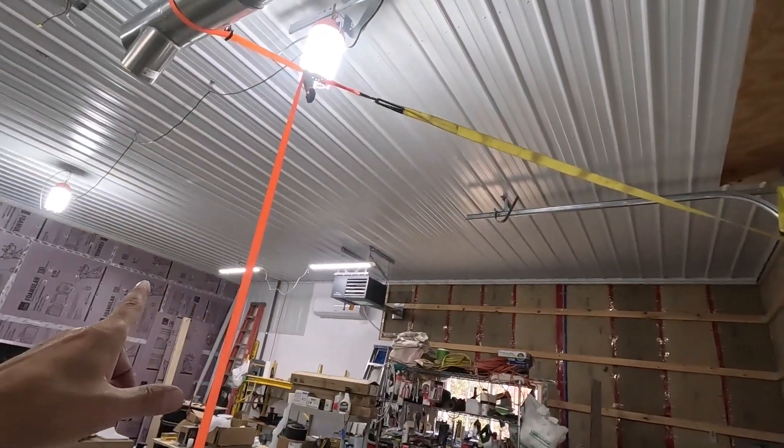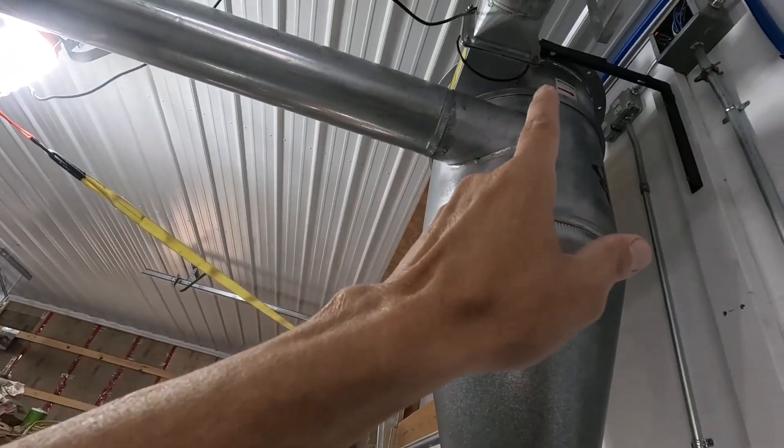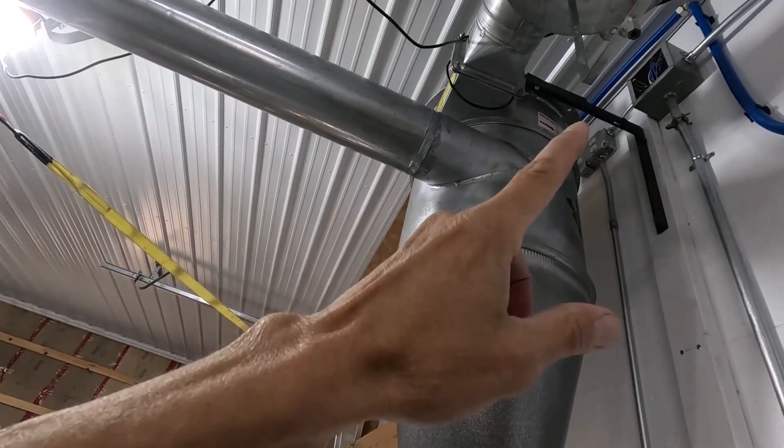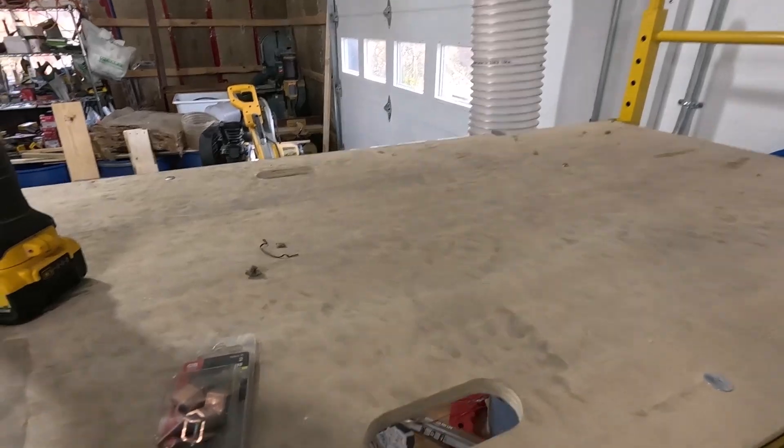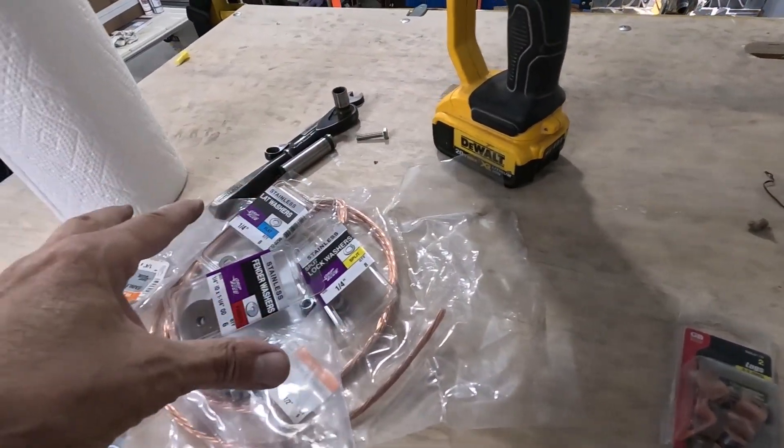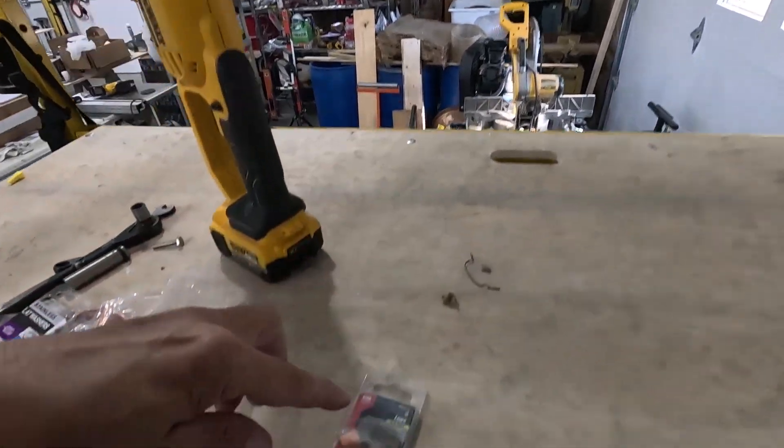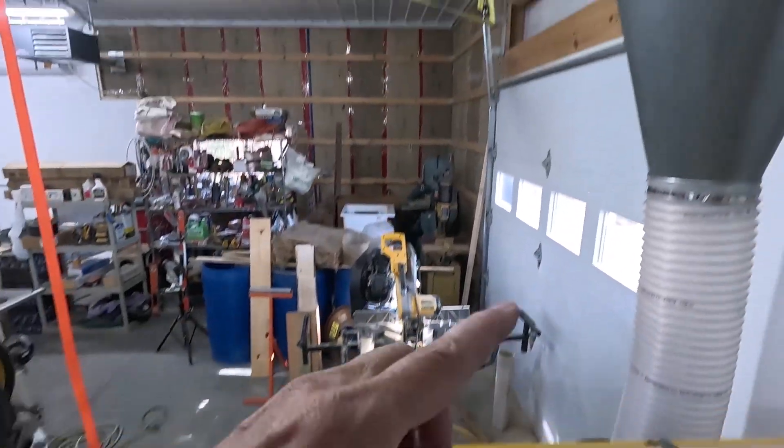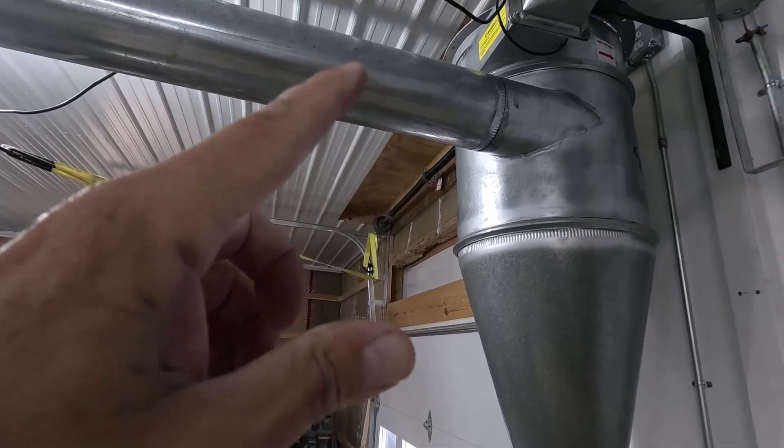Now I've got to go get the scaffold over here, and we'll get this one connected. Okay, let me show you what I've got here. I've got a grounding wire and various nuts and bolts and stuff to get this connected to the cyclone barrel.